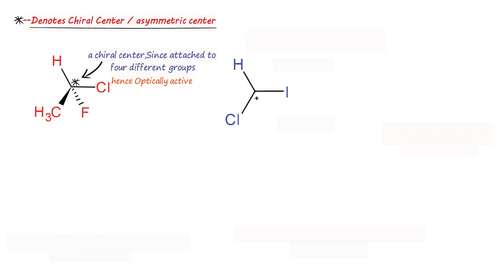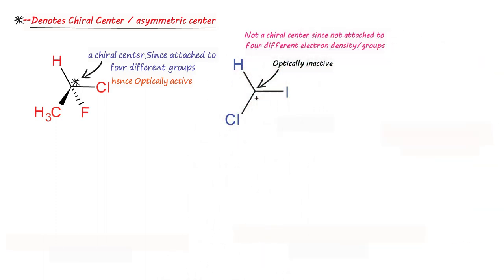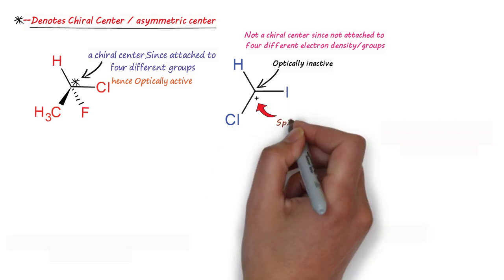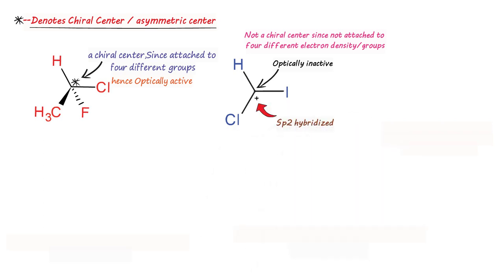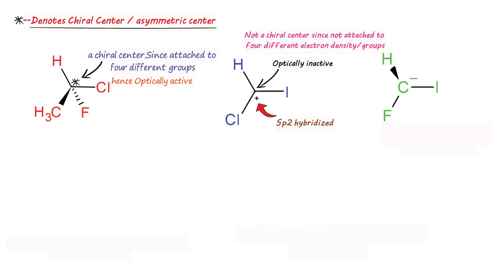The carbocation has no fourth electron density, so it is optically inactive because there is no chiral center. We can also see it another way: the carbocation carbon is sp2 hybridized, making it a planar molecule. Because of being planar, it does have a plane of symmetry, and in that way also it is optically inactive, that is achiral.